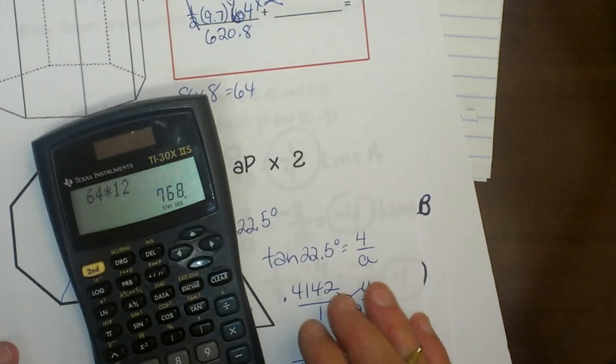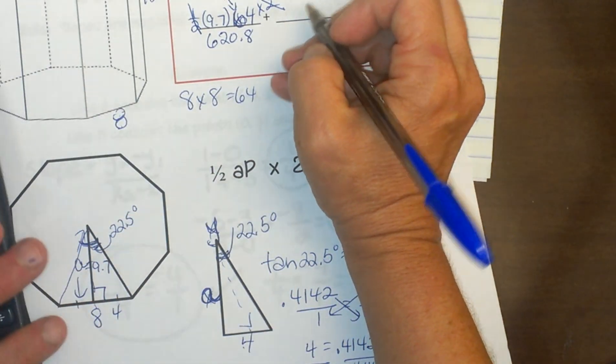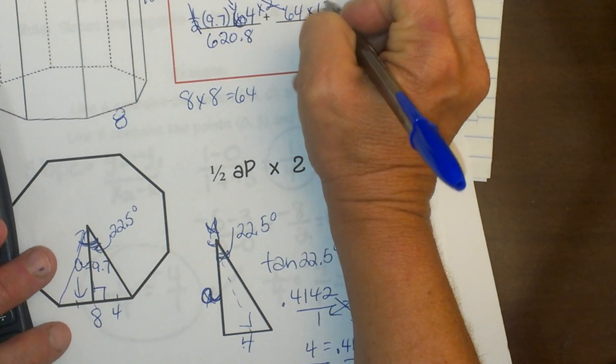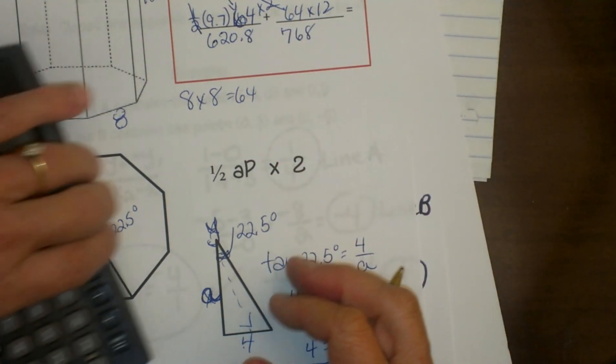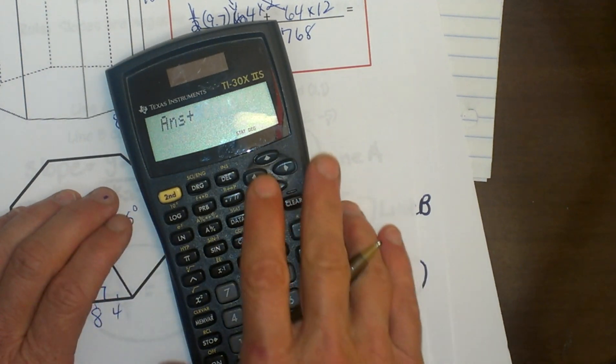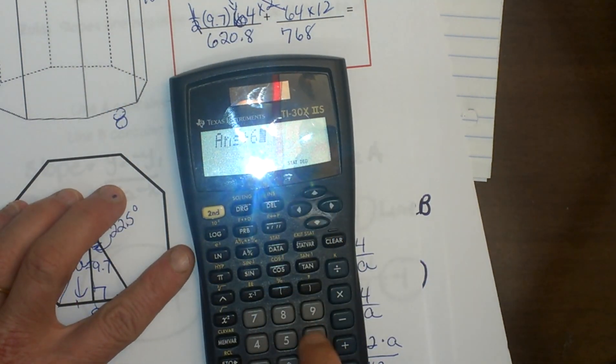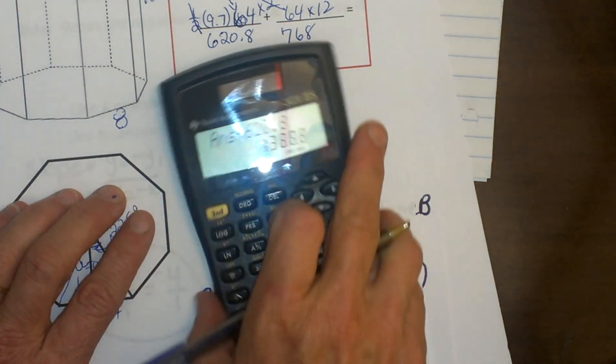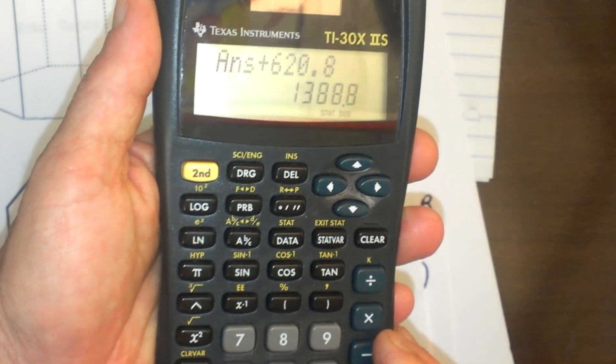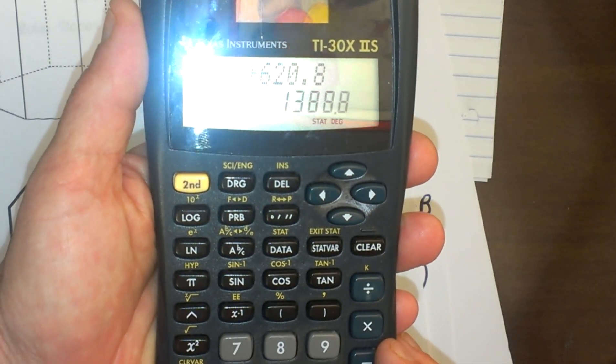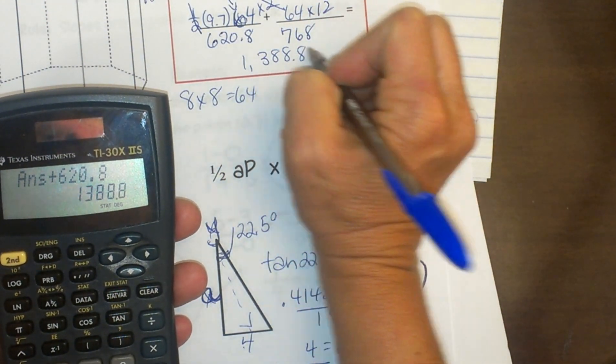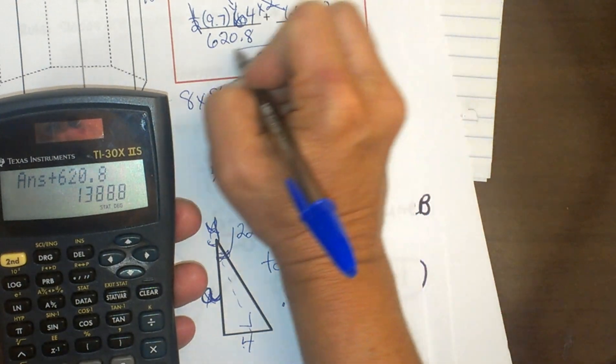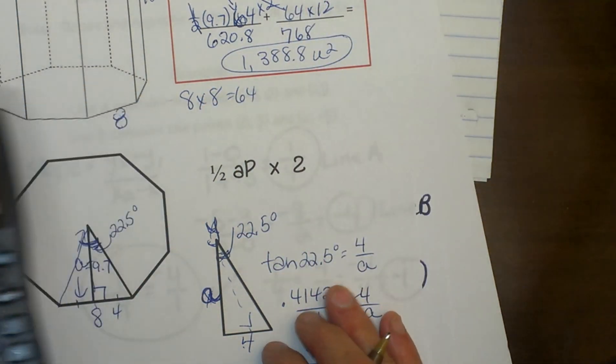Now let's go back up and put it all together. So I did perimeter times the height, and that gives me 768. Now let's add to that our 620.8, and that gives me 1,388 square units because it is area. And that is how you would find the area.